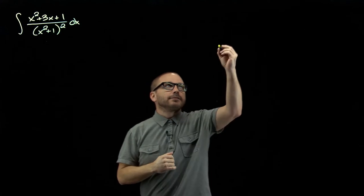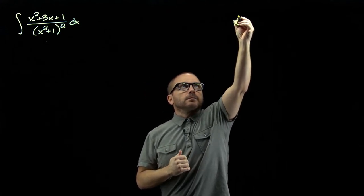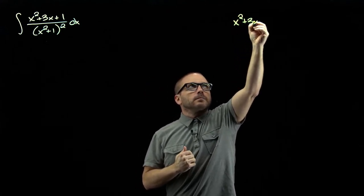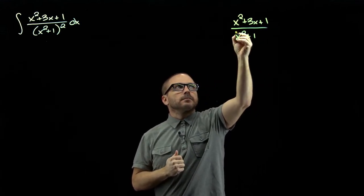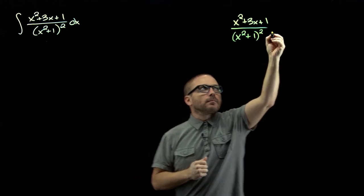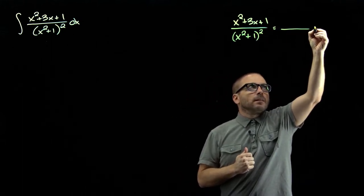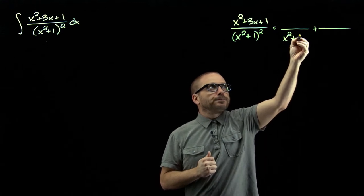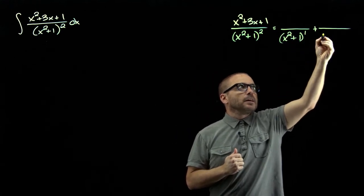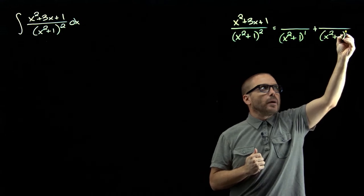So when we start off with our expression, we're gonna have an x squared plus one to the first, and an x squared plus one squared.